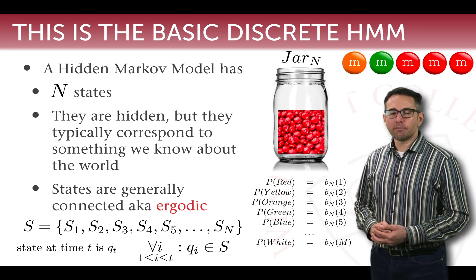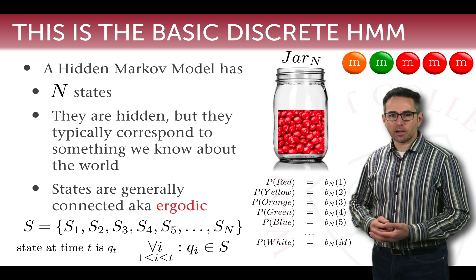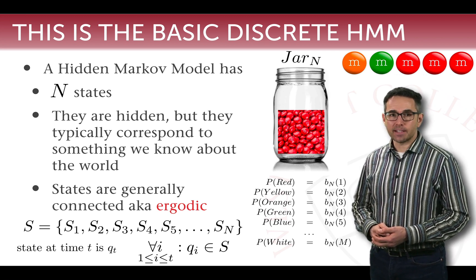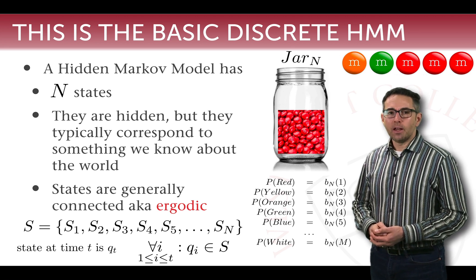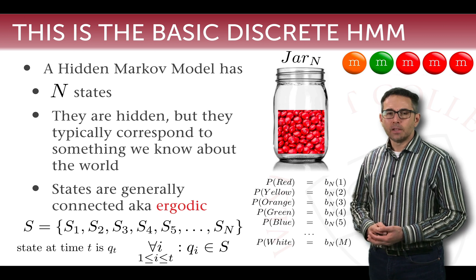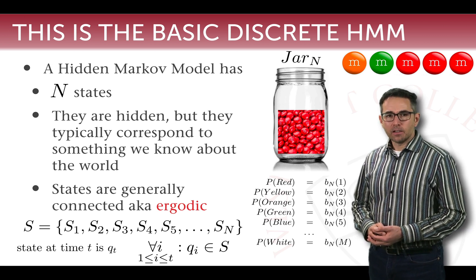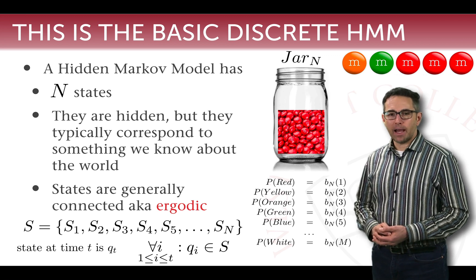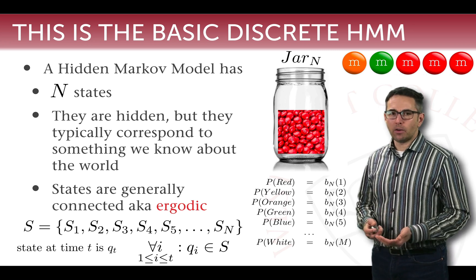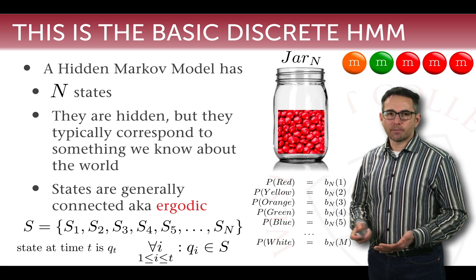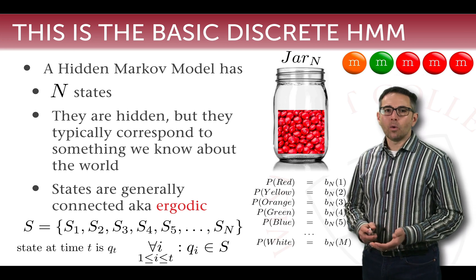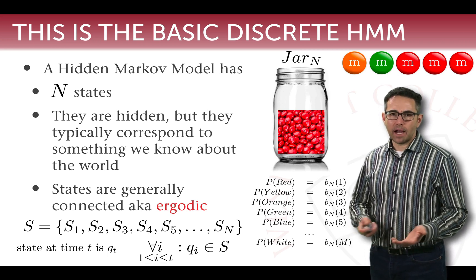To define a hidden Markov model, we have to recognize that it has N different states, and we need to define what those N states are. In the case of the M&Ms example, the N states are N different jars that we can draw from. Which state we're currently in is hidden — as we're observing the observations coming out, we don't know which state is currently generating the observation. But typically when we create a model we're modeling something we understand about the world; for example, we know there are jars, we just don't know which jar we're picking from or how we're transitioning between them.